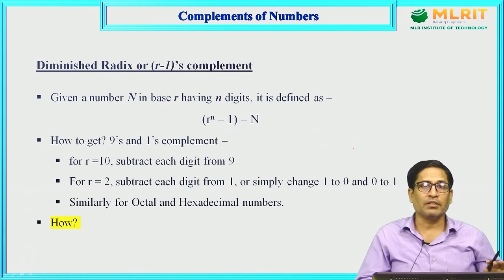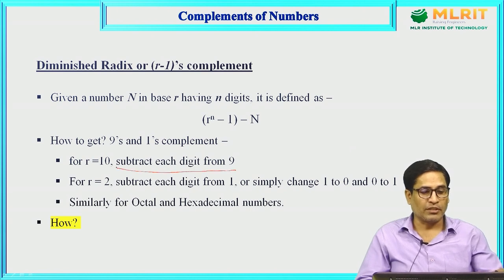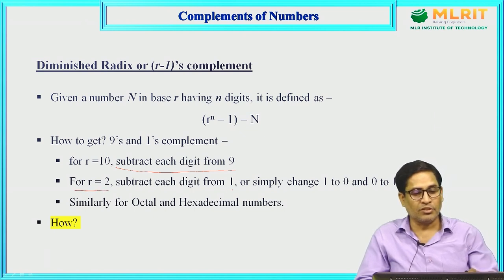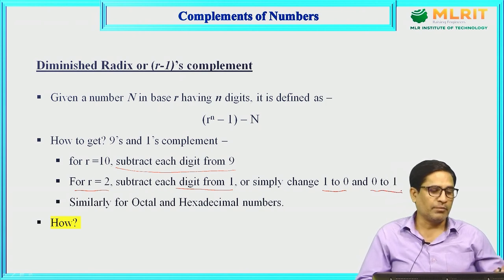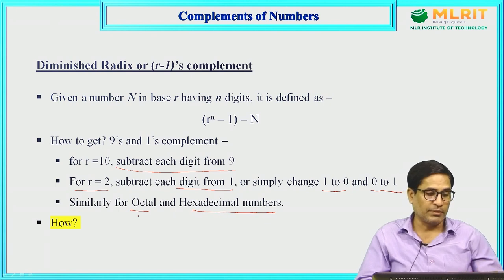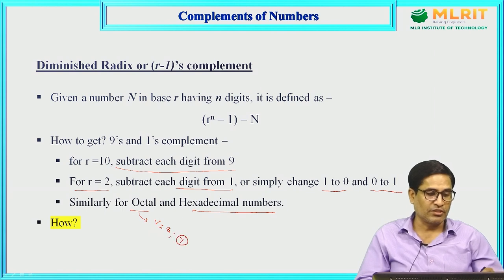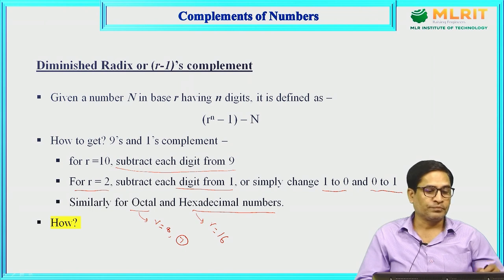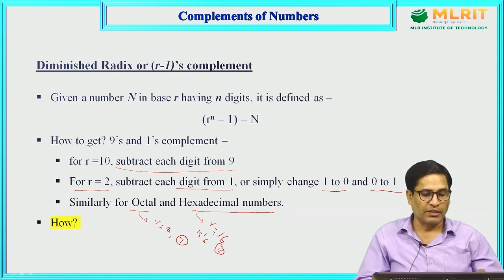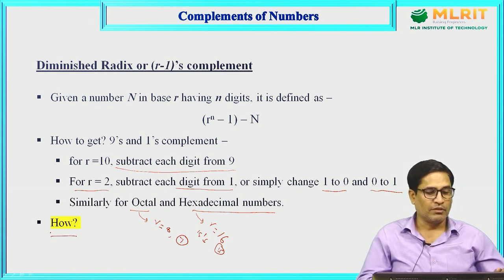To summarize r-minus-1's complement: for decimal, subtract each digit from 9; for binary, change 1 to 0 and 0 to 1; for octal (r=8), subtract each digit from 7 to get 7's complement; for hexadecimal (r=16), subtract each digit from 15 to get 15's complement.